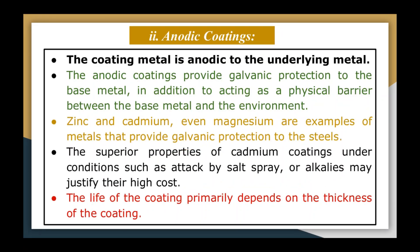Now let us discuss anodic coatings. In anodic coatings, the coating metal is anodic to the underlying metal, and these coatings provide galvanic protection to the base metal. In addition, they act as a physical barrier between the base metal and the environment. When the coating is dense, non-porous, continuous, and adhering, it separates as a physical barrier between the environment and the base metal. At flaws, cracks, discontinuities, and pinholes, the base metal is protected by the galvanic action of the coating.